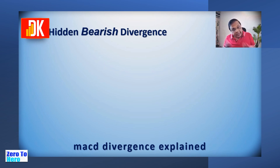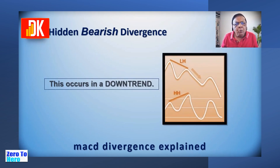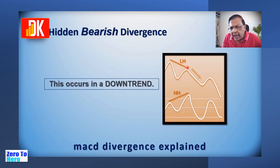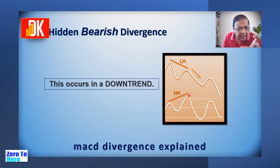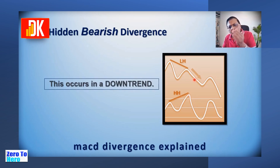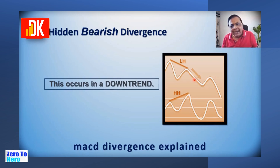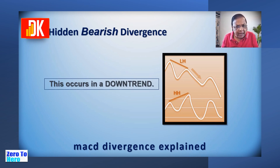What is hidden bearish divergence? It is just the opposite of hidden bullish divergence. Here the market is downtrending. The market has made a lower high — this high is lower than the prior high — while the MACD is showing a higher high formation in the same area. So it's a possibility of trend continuation, meaning the price is likely to fall further. The possibility of initiating a short sell is indicated, of course combined with other studies in technical analysis to enhance accuracy and trade management.